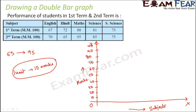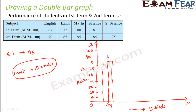Now let us start drawing the bars. The first bar is for English. In the first term the score was 67, which would be slightly above 65 on the y-axis. So we draw a bar up to 67. In the second term the score was 70, so we draw another bar immediately after it up to 70. We shade the second term bar to distinguish it. That is how we draw two bars for English.